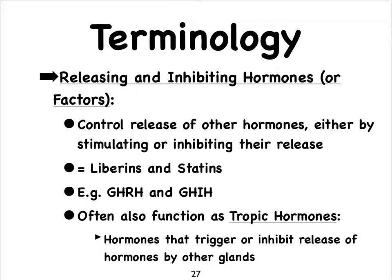These are hormones that control the pituitary gland, as we'll learn. Many hormones, particularly these releasing and inhibiting hormones, also function as tropic hormones — meaning a hormone that triggers or inhibits the release of another hormone by another gland. For example, the hypothalamus secretes Thyroid Hormone Releasing Hormone, which triggers the anterior pituitary to release Thyroid Stimulating Hormone (TSH), which in turn triggers the release of thyroid hormone from the thyroid gland. So TSH also functions as a tropic hormone.